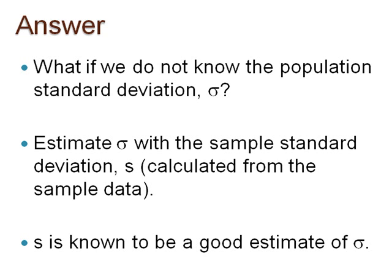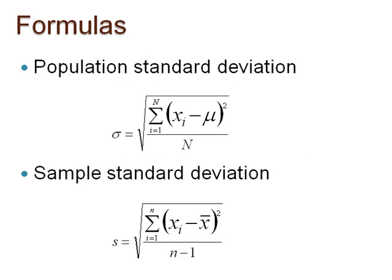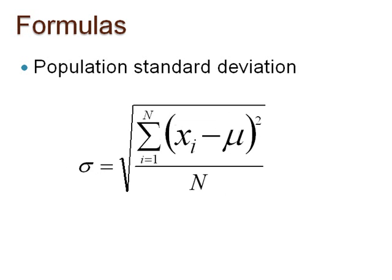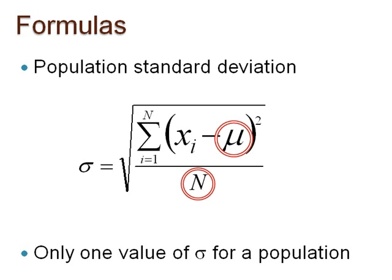Here are the formulas for the population and sample standard deviations. The population formula assumes you have measurements on all individuals in the population and uses the population size capital N and the population mean mu in its calculation. There is only one value of sigma for the population. However, in reality, sigma is often unknown.